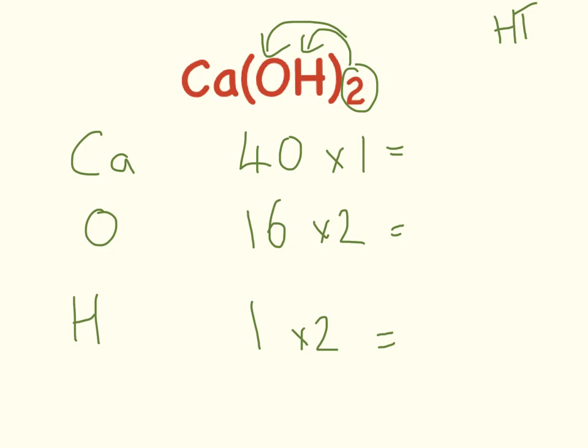40 times 1 is 40. 16 times 2 is 32. And 1 times 2 is 2. If we add these all together, 40 plus 32 plus 2, we get 74.